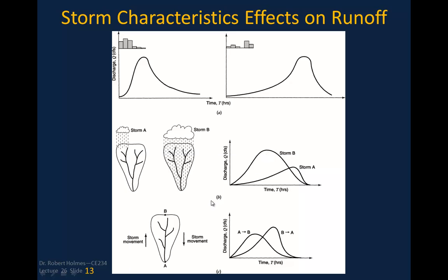If we look at storm movement direction: a storm moving from A to B causes the hydrograph to peak much quicker than a storm moving from B to A. Even though both curves may have the same volume, the peak is much greater when the storm moves in the direction of drainage — rain falling upstream arrives at the outlet at about the same time the storm is dumping rain over the middle and lower basin, producing a more peaked hydrograph with a larger peak magnitude.